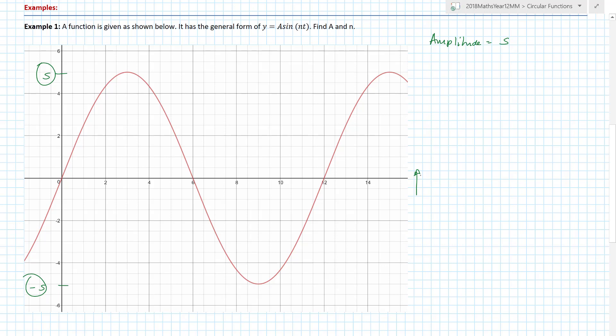So for example had this been at six and this has been at four, then you might have turned around and said well the amplitude is six without noticing they've actually squeezed the graph up just a little bit. So that's a trick. Next thing, what do we need to know? We need to know the period.